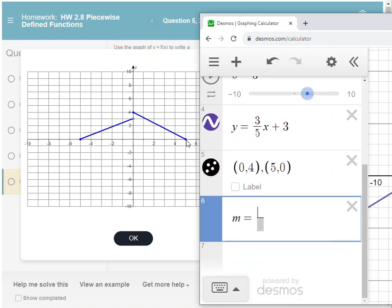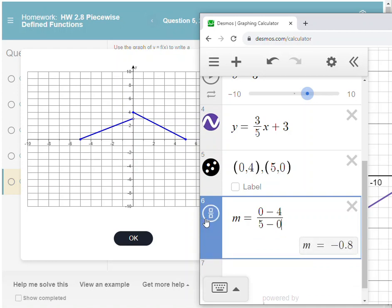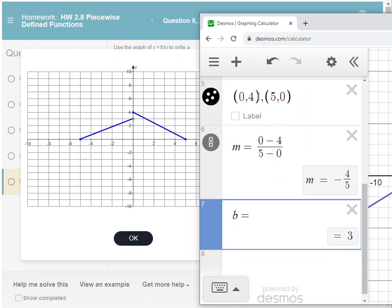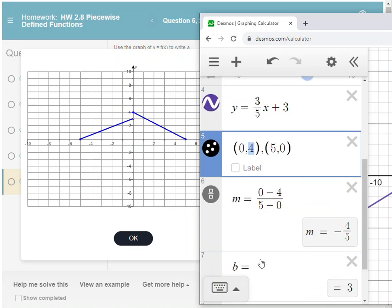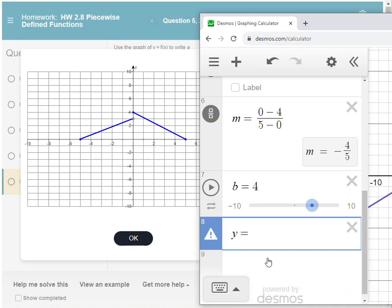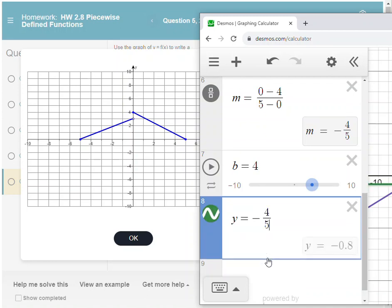So again, we're going to be using the formula for slope. I'll start with 0 minus 4 over 5 minus 0, and that simplifies to the fraction -4/5. I did already know the b value here was 4 from the y-intercept. So when I write the equation of this line, it's going to be y = (-4/5)x + 4.